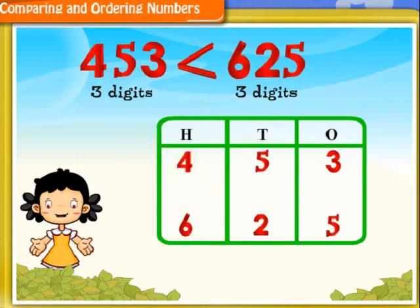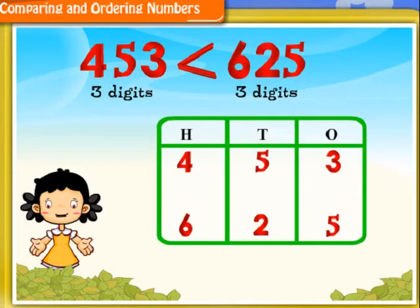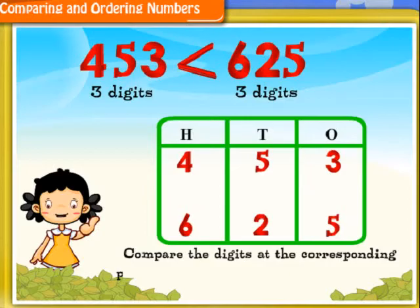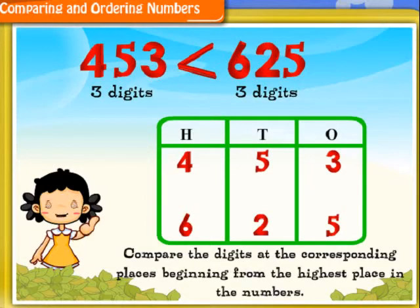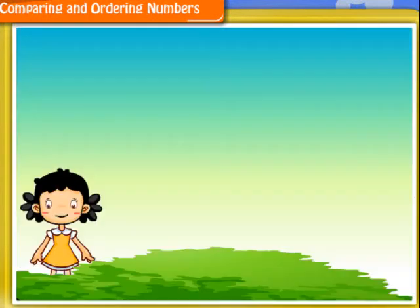So, the rule to compare numbers having the same number of digits is: compare the digits at the corresponding places beginning from the highest place in the numbers.